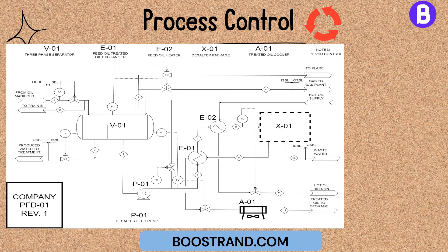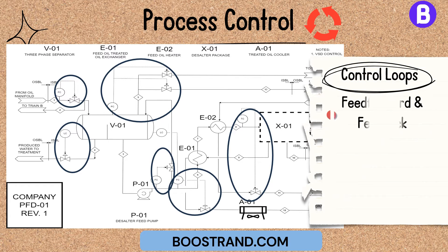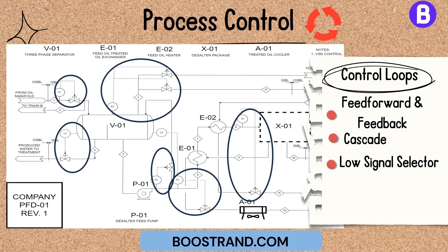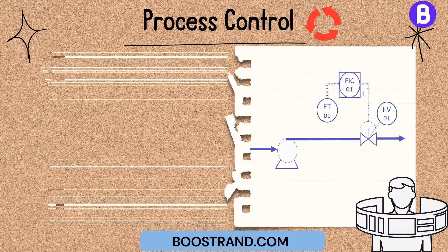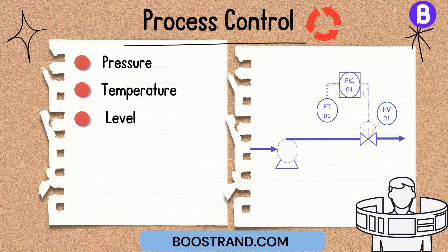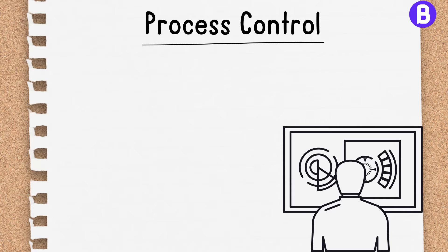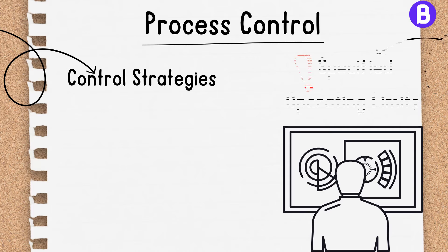In addition, a PFD shows the behavior of the control loop — whether it shall be feed-forward, feedback, cascade, or include a low signal selector, or a custom function such as summation of two flow sources or ratio control. A PFD goes beyond a flowsheet from simulation software by incorporating control loops, showing the process parameters to be controlled such as pressure, temperature, level, and flow rates. By choosing the optimum control parameter, the PFD assists in establishing effective control strategies to ensure the process operates within specified limits.